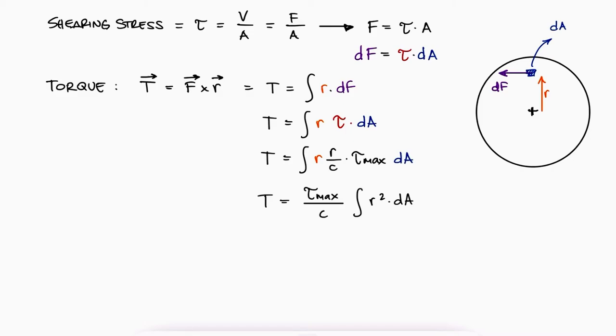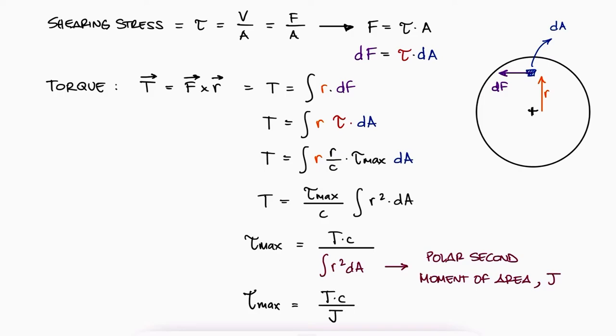This integral is what we call the polar second moment of area, and we commonly use capital J as its variable, resulting in an expression for tau max equal to tc over J.